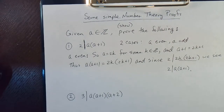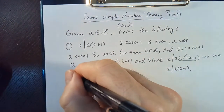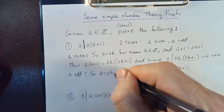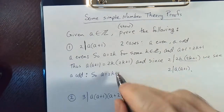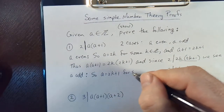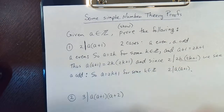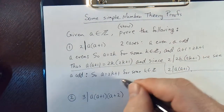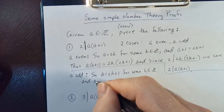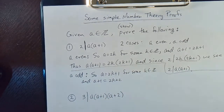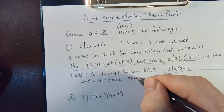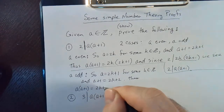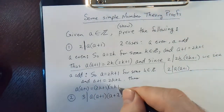So very simple. The next case will be very similar: a odd. So a equals 2k plus one — that's how you define an odd number for some k in the set of integers. And a plus one is equal to 2k plus two. Thus, a times a plus one is equal to 2k plus one times 2k plus two.